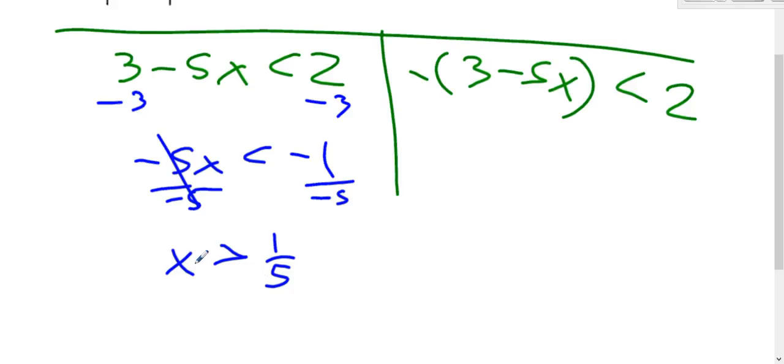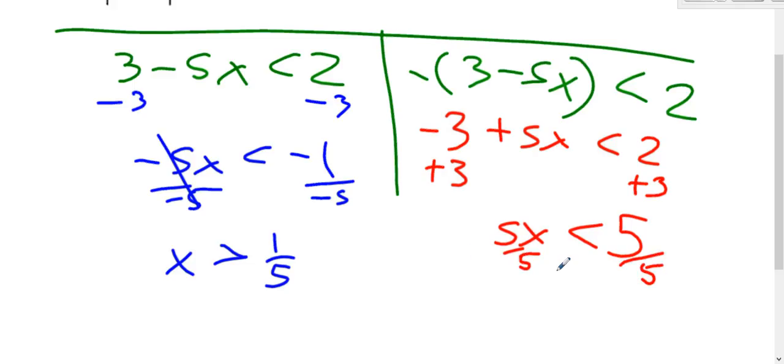X is on the left, so we're good. Distribute the negative. Add 3 and divide by 5. Since we're dividing by a positive, we don't need to switch the inequality or anything. It's just x is less than 1.